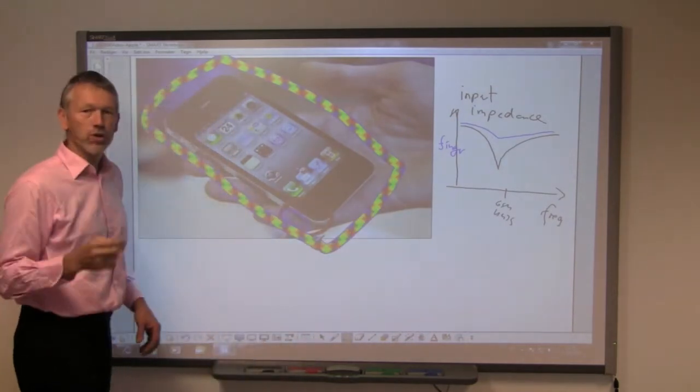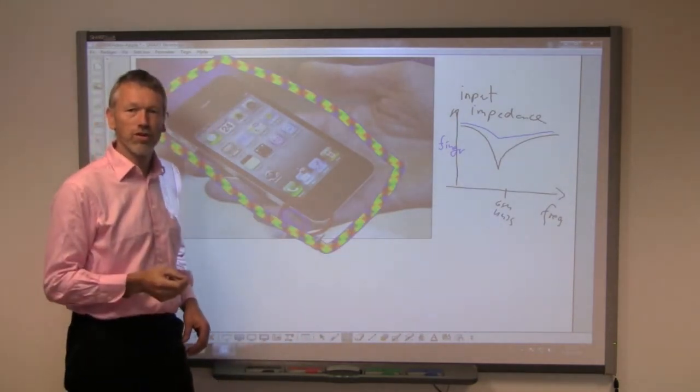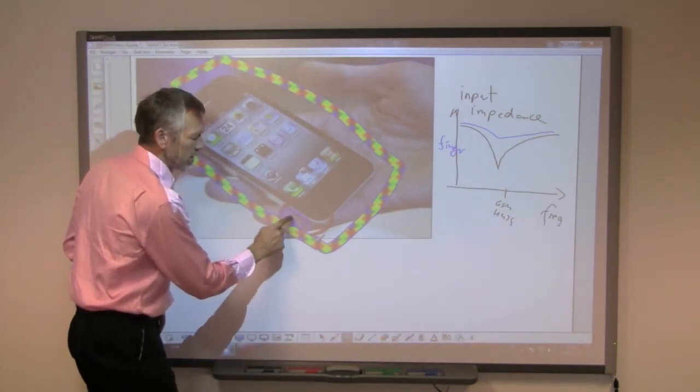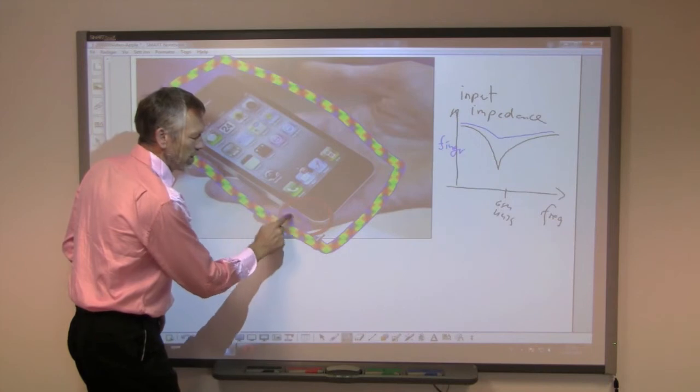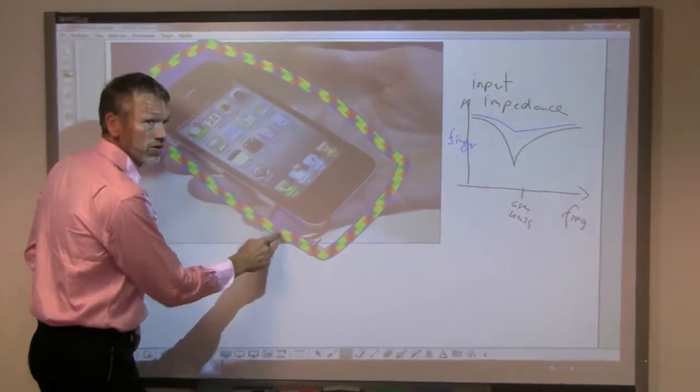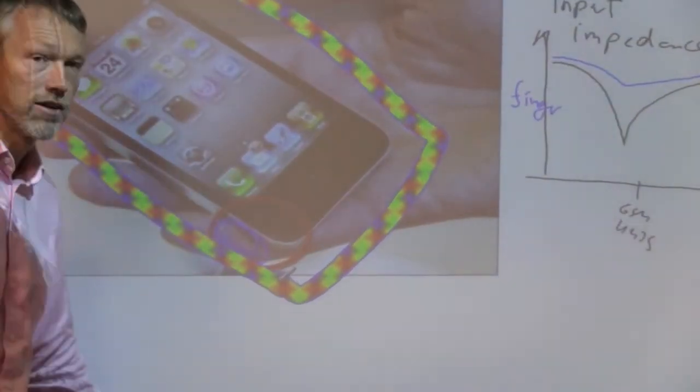Now while putting the bumper around the iPhone, what do we do? Well we create some air here in between the antenna and the finger, because the finger will be just outside here.